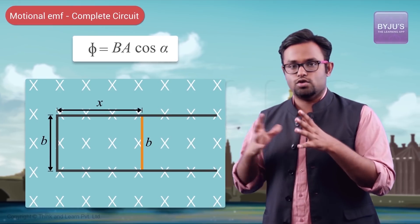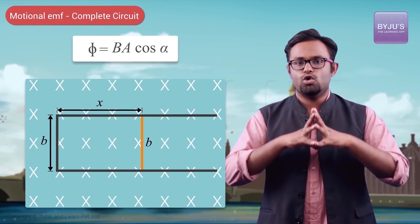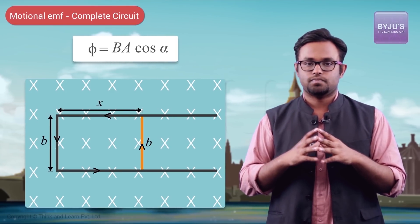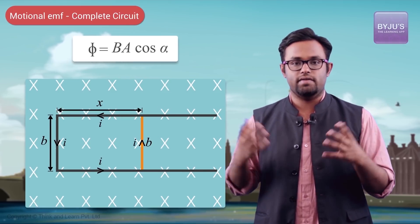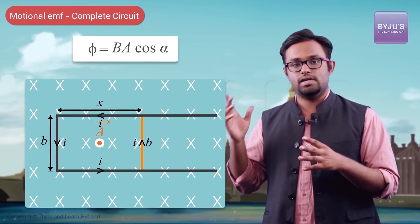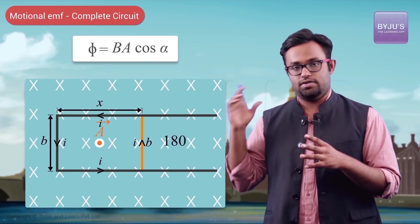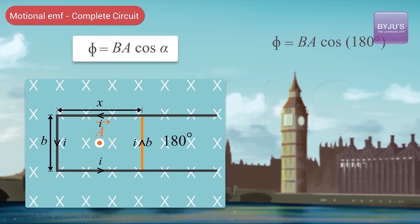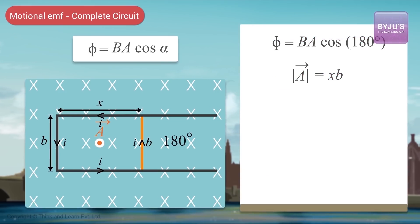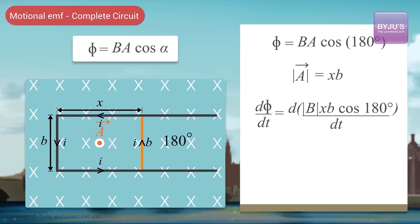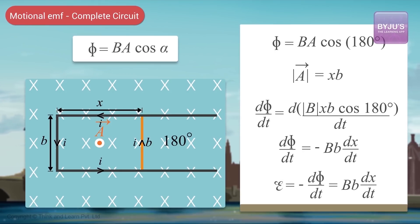A third way is to go completely mathematical. Choose a direction of current — that establishes a direction of the area vector. Once the area vector direction is established, you can see the angle between the area vector and the magnetic field. Write the value of flux. The area will basically be X times B, and B is not changing — only X is changing. So dΦ/dt will yield only the dX/dt term. The negative of dX/dt gives the result, and since it comes out positive, the direction initially chosen was correct.